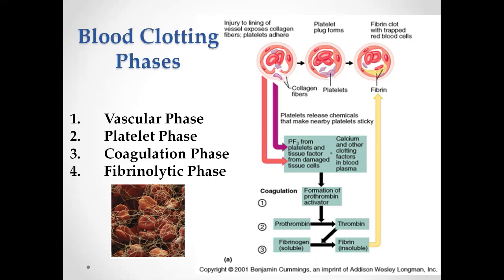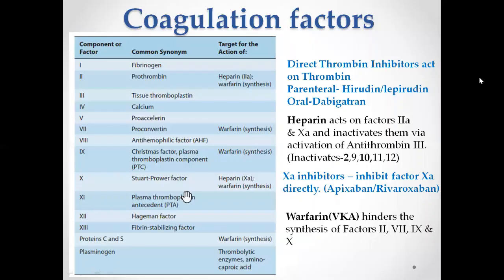These sticky platelets come together and form a plug, known as the platelet plug — this constitutes the platelet phase. The third phase, coagulation, is when platelet factors and tissue factors from damaged cells combine with calcium and other clotting factors in blood plasma to form a blood clot. The last phase is the fibrinolytic phase, where the fibrin clot is broken down by plasminogen converting to plasmin, which breaks down the fibrin — also called the thrombolytic phase.